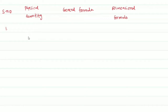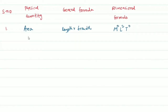Now, the first physical quantity is area. The dimensional formula for area is length into breadth. In mechanics, we generally use three fundamental quantities: mass, length, and time. So area gives us M power 0, L power 2, T power 0.